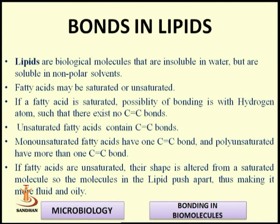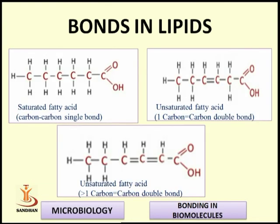If fatty acids are unsaturated, their shape is altered from a saturated molecule. The molecules in the lipid push apart, making it more fluid and oily. In summary, there are two types of fatty acids: saturated and unsaturated. Saturated fatty acids contain carbon-carbon single bonds, while unsaturated fatty acids contain one or more carbon-carbon double bonds.